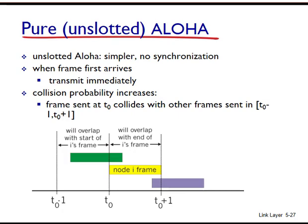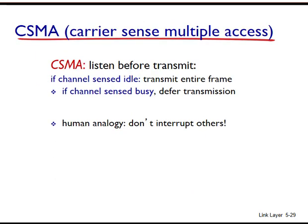The efficiency of unslotted ALOHA is even worse than the 37% of slotted ALOHA. In both slotted and pure ALOHA, a node's decision to transmit is made independently of the activity of the other nodes attached to the broadcast channel. A node pays no attention to whether another node is transmitting when it begins to transmit, nor does it stop transmitting if another node begins to interfere. As human beings, we have human protocols that allow us to behave better, decrease the time spent colliding with each other in conversation, and increase the amount of data we exchange.